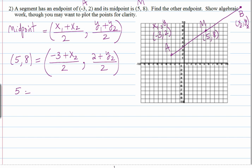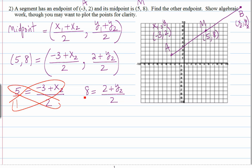So we're going to set each of these, match the X's with the X's, so 5 is the average of negative 3, and another number. Now we're going to put 5 over 1, and cross multiply. We're going to put 8 over 1, and cross multiply.